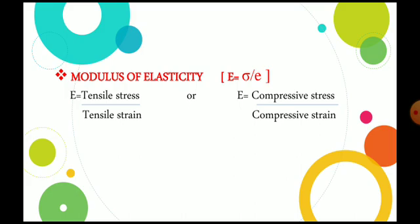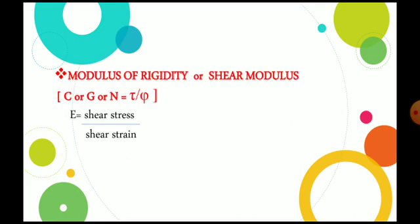Young's modulus is tensile stress by tensile strain. Now, modulus of rigidity — also called shear modulus — is denoted as C, G, or N; all are the same. It is shear stress divided by shear strain, written as tau by phi. So shear stress by shear strain is the modulus of rigidity.